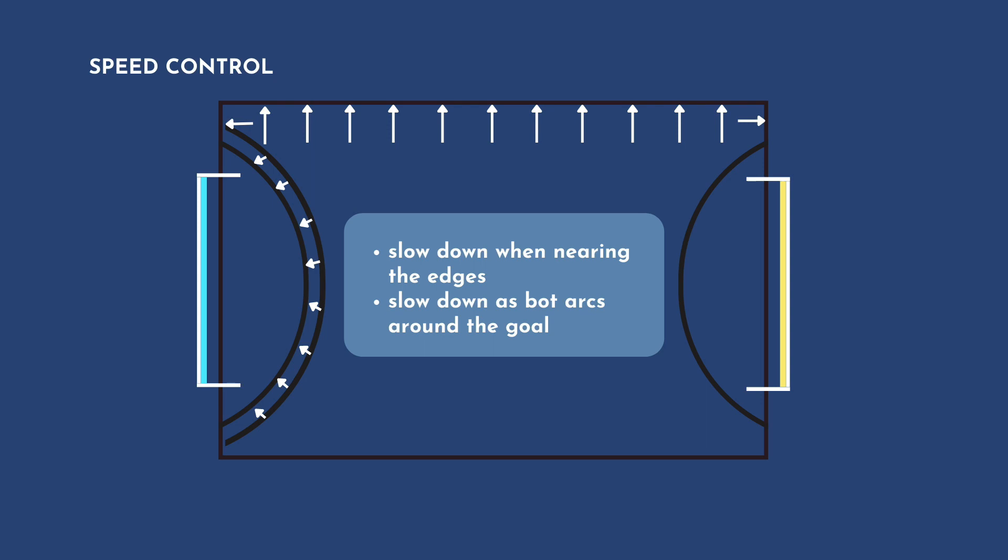Next, for speed control, the speed of the robot is dependent on its position. As it nears the edges of the playing field, the robot will slow down to avoid it from running out of bounds. If the robot is moving towards the goal, it will also slow down along the arc around the goal.